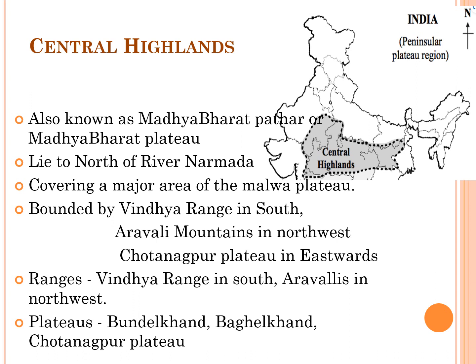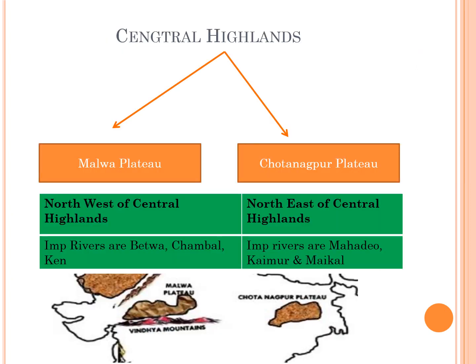These Highlands lie to the north of River Narmada, covering a major area of the Malwa Plateau. They are bounded by important ranges like the Vindhya Range in the south, Aravali Mountains towards the north-west, and the Chotanagpur Plateau to the east. The important plateaus in Central Highlands are Bundelkhand, Baghelkhand and Chotanagpur Plateau. Central Highlands are further divided into the Malwa Plateau and the Chotanagpur Plateau.